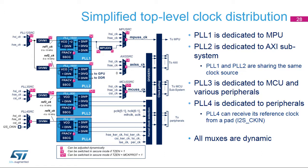PLL1 is dedicated to the MPU; DIVP shall be bypassed or use even division ratios to ensure a 50% duty cycle. PLL2 is dedicated to the AXI subsystem, GPU, and DDR. PLL3 is dedicated to the MCU subsystem and peripherals' kernel clocks. PLL4 is dedicated to peripherals' kernel clocks. Each PLL has a dedicated pre-divider to adjust the reference clock. Note that the PLL's clock source must not be changed if any PLL is enabled. The generation of MPU, AXI, GPU, and DDR clocks can be switched to secure mode; the generation of MCU clocks can also be switched to secure mode if desired.